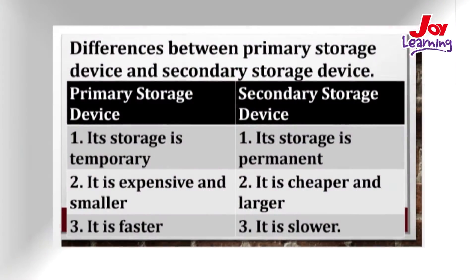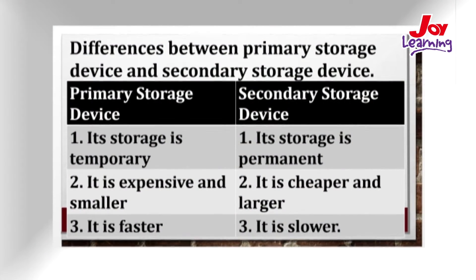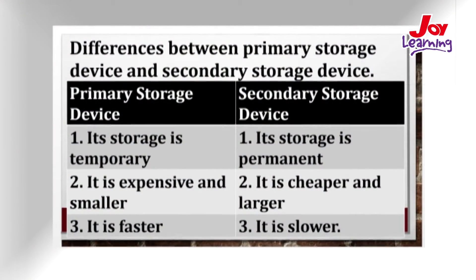The difference between primary and secondary storage: primary storage is temporary — it keeps information while the computer is in use, and if there is any power outage, the information will be lost. Secondary storage is permanent — it keeps information until the user decides to delete it. Also, primary storage is expensive and smaller, while secondary storage is cheaper and larger. Primary storage is also faster compared to secondary storage.